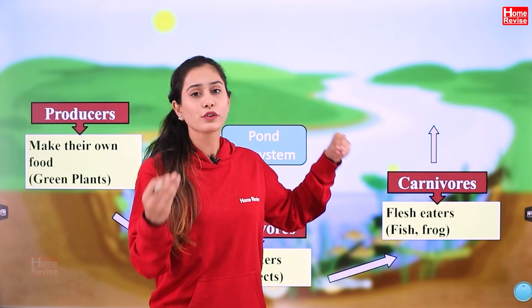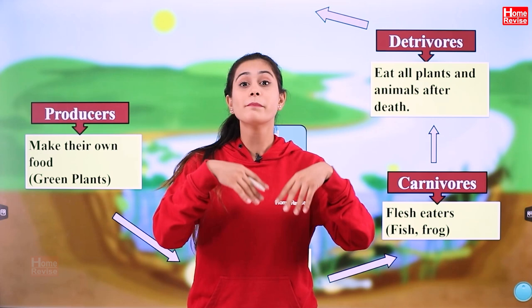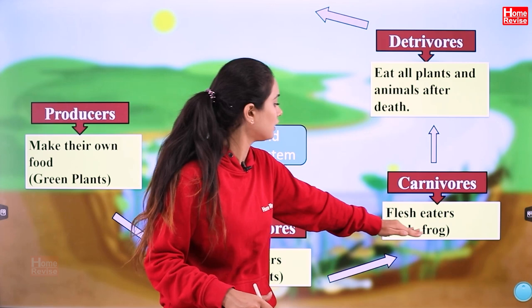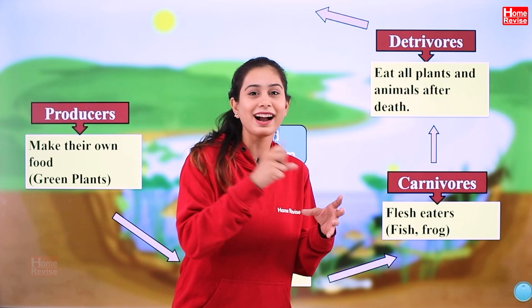Then comes detritivores. What are detritivores? Detritivores are the ones who eat dead plants and animals. No one will always eat a frog or an insect — sometimes they will die on their own, not as food for anyone else. So when they die, who will eat them? That is the detritivores.